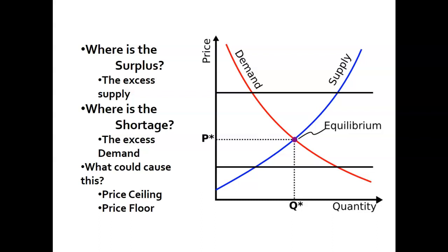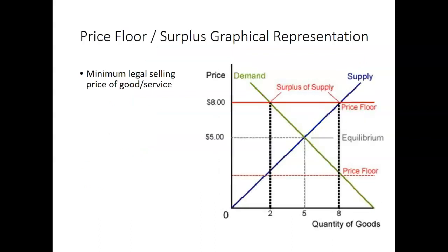Now for the time being, a shortage and a surplus are going to occur because of a price ceiling and a price floor. Now these are going to be government imposed prices. They're going to be regulated prices that the market has to abide by. So let's talk about that.